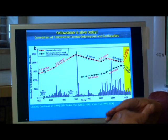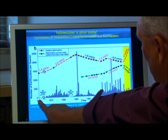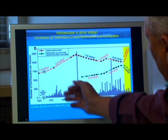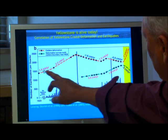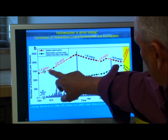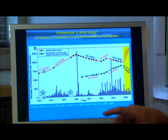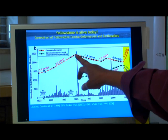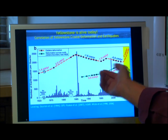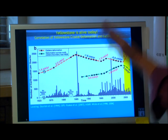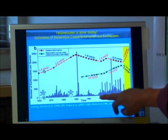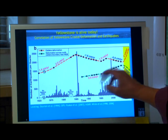Correspondingly, here's a diagram showing how fast the caldera is going up and down. Between 1923, when they first installed the monuments we measure, to 1975, it was going up at about two centimeters per year—roughly an inch per year. It continued over to the time of this 1985 earthquake, then the caldera started going down, went back up here in '95, went back down.